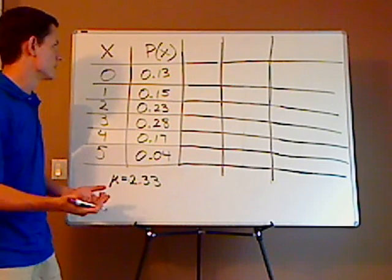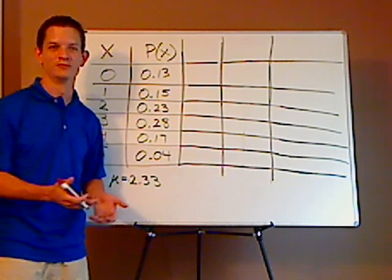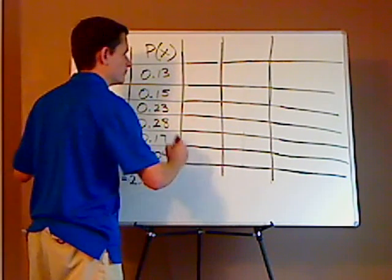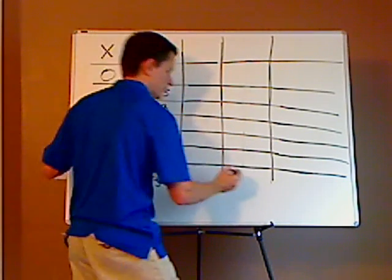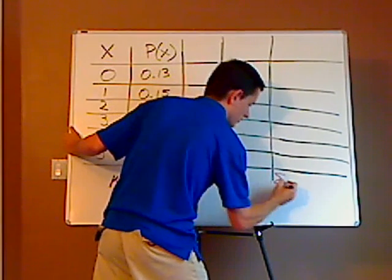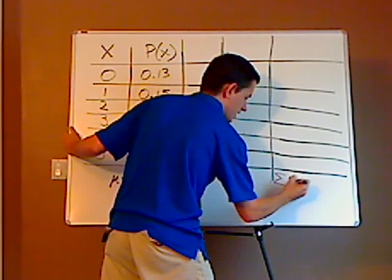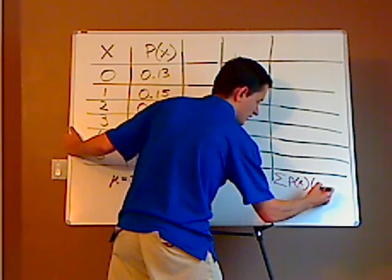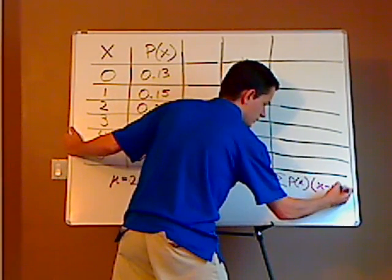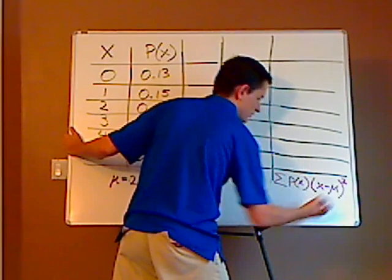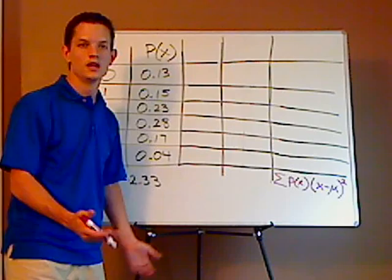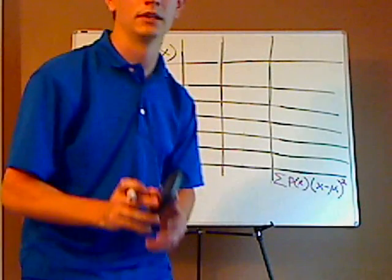Alright, first off, what's the formula, right? That's the most important thing. The formula is going to be the summation of P(X) times (X minus the mean or expected value) squared. That's the formula. So obviously you're going to need a calculator. Let me grab my calculator.